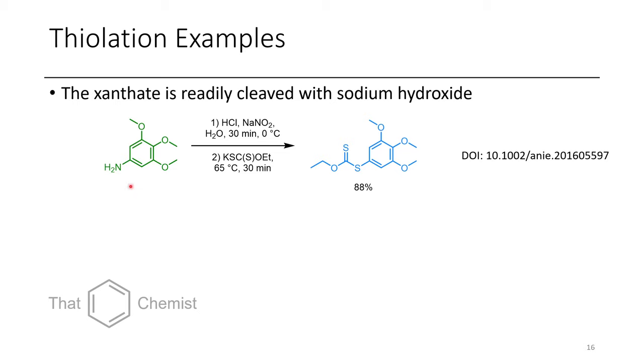So an example of thiolation is the use of potassium ethylxanthate. This is commercially available, but it's very easy to prepare just using potassium ethoxide in the presence of carbon disulfide. And so essentially, this whole sulfur thing just displaces the diazonium. Now, if you're wondering how you convert this to a thiol, you can just treat it with sodium hydroxide, and these go relatively easily. This is a fairly electrophilic center.